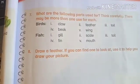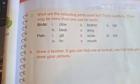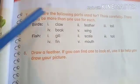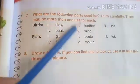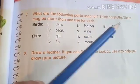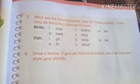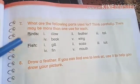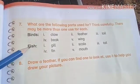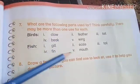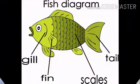Hi everyone, today we are going to do the second part of question number seven: what are the following parts used for? Think carefully, there may be more than one use for each. Yesterday we did the first part, and today we are going to do the second part. These are the five body parts of fish.